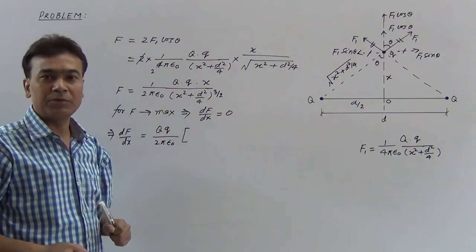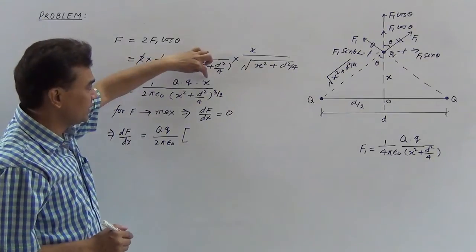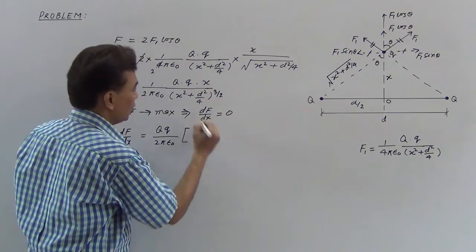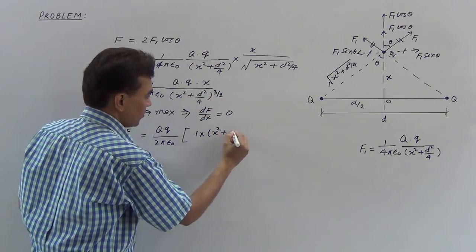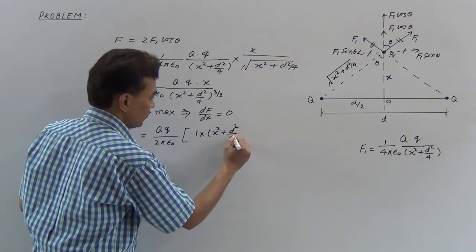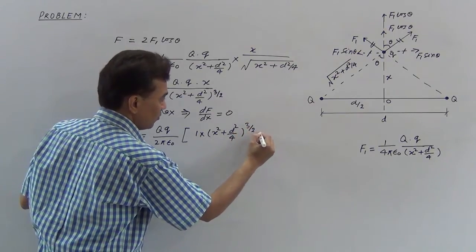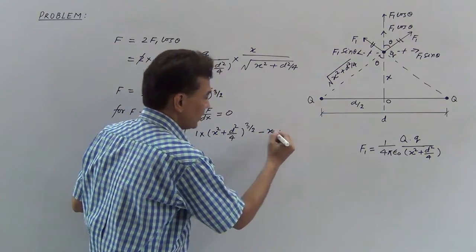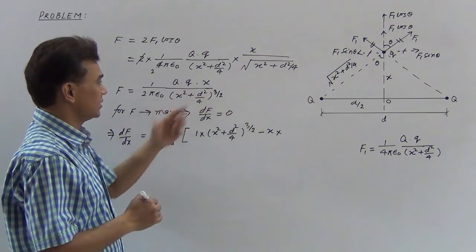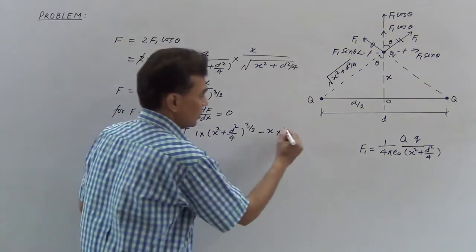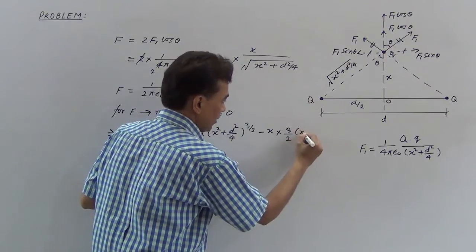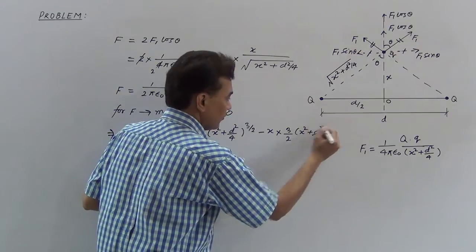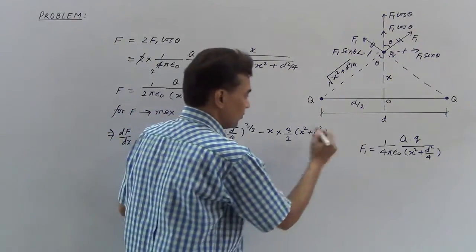Applying the quotient rule: numerator term is 1 times (x² + d²/4)^(3/2), minus x times the differential of the denominator. The derivative of (x² + d²/4)^(3/2) by chain rule gives (3/2)(x² + d²/4)^(1/2) times 2x. This whole expression is divided by (x² + d²/4)^3.